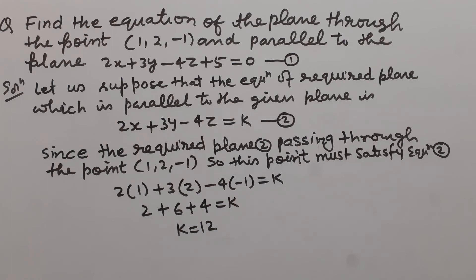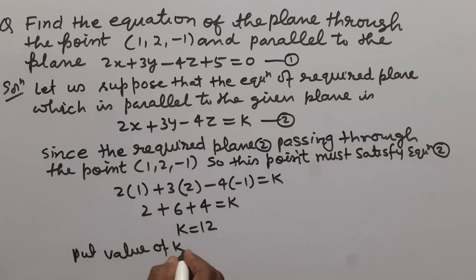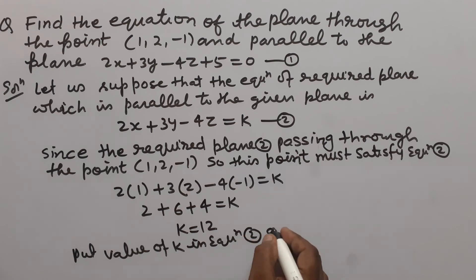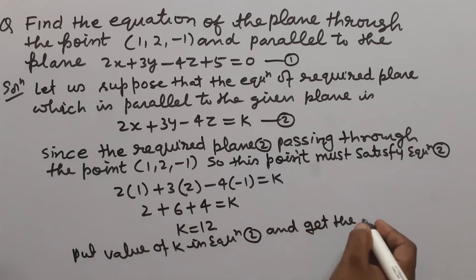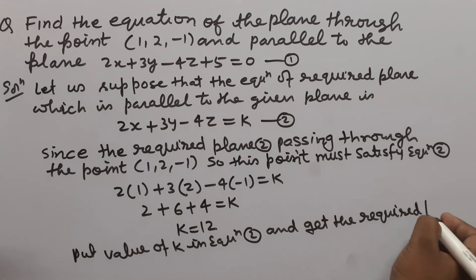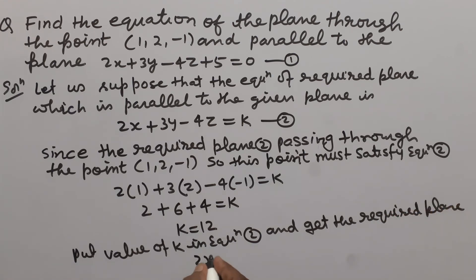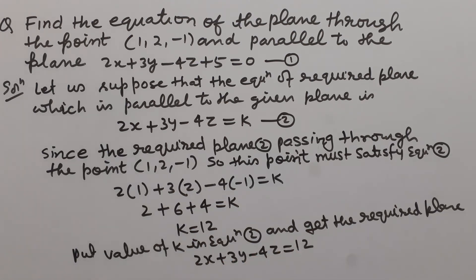Now, putting the value k = 12 into equation 2, we get the required plane: 2x + 3y - 4z = 12. This is the plane which is parallel to the given plane 2x + 3y - 4z + 5 = 0 and passing through the point (1, 2, -1). Thank you.